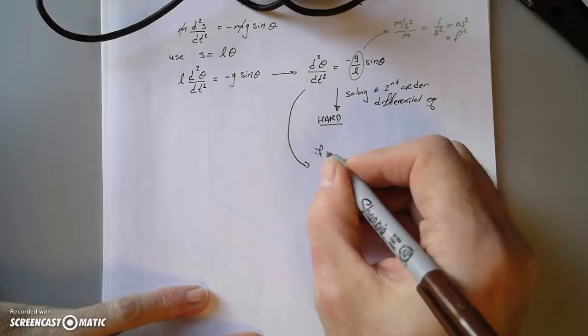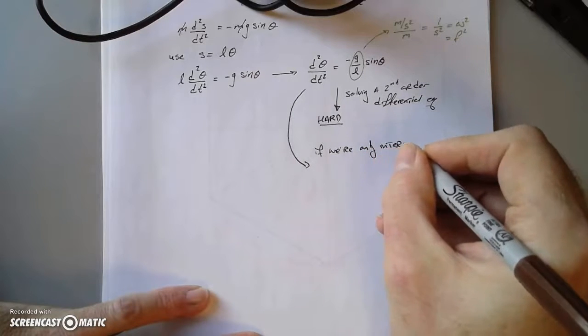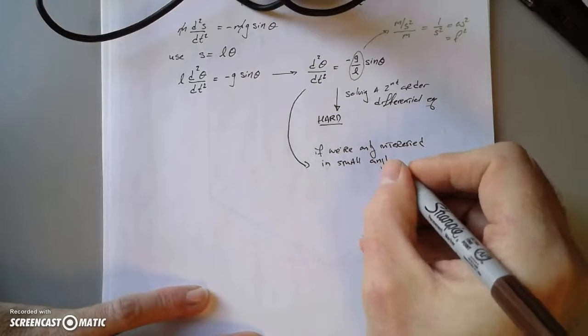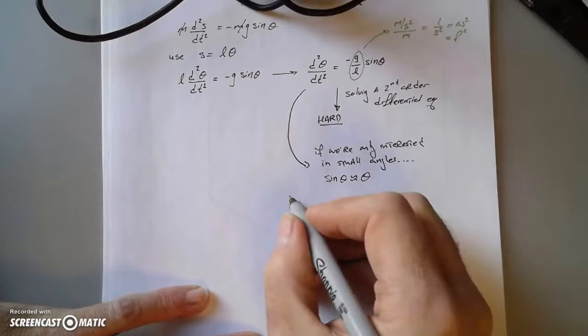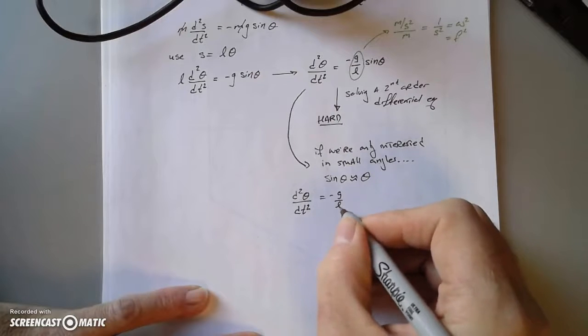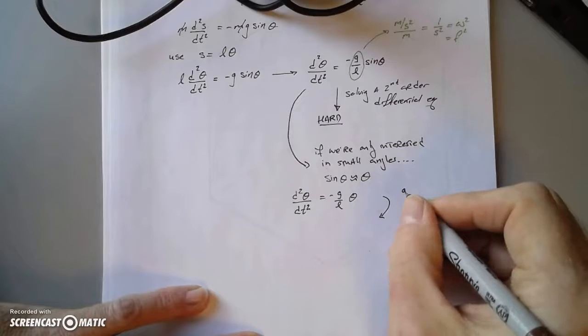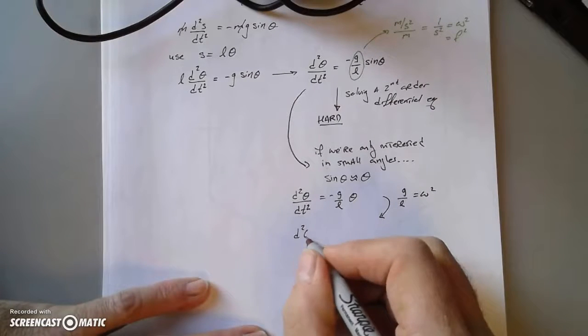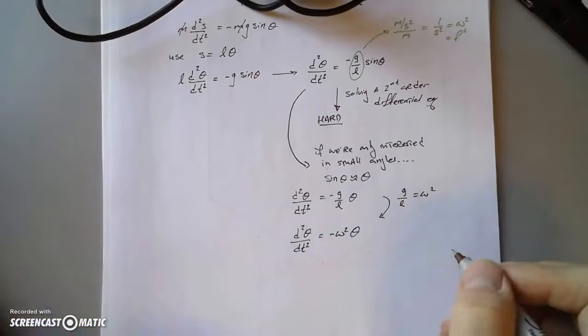So what can we do? Well, if we're only interested in small angles, then we know that sine of theta is approximately equal to theta. And we can rewrite this differential equation that we got from Newton's second law. And also, let's take g over L and call that omega squared because it has the same units. That might seem a little unmotivated at this moment, but it does have the same units. So here's a differential equation. Theta is a function of time. There's an unknown function. That's what we do. It's not just a variable.